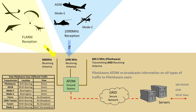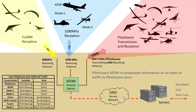The second antenna receives all transmissions from aircraft transmitting on the aviation band. This includes Mode C, Mode S and ADS-B out technologies. The third antenna is a receive-and-transmit antenna that operates on the regulated 869.5 MHz band. Using this, the locations of all aircraft picked up by the first antennas are rebroadcast to the PilotAware units, which will then see all transmitting aircraft.